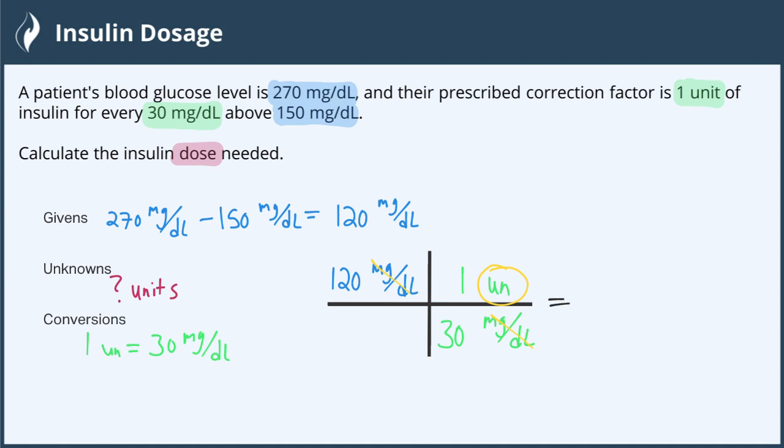So now we're going to multiply across the top. 120 times one is 120. And on the bottom, we just have 30. And so when we do that division, we end up with four. And our unit is units of insulin. There you go.